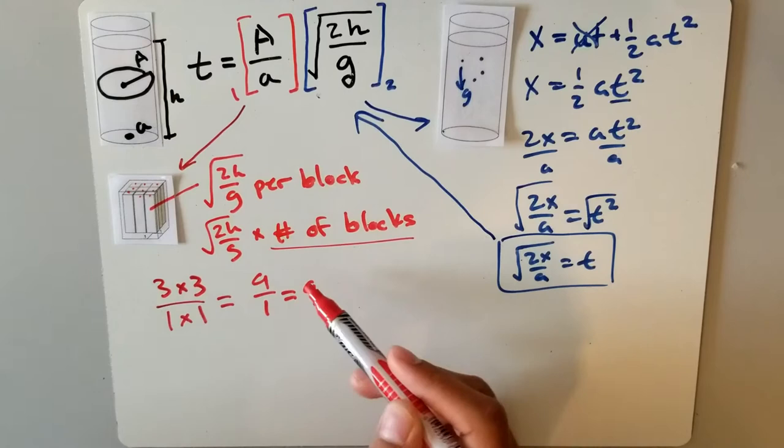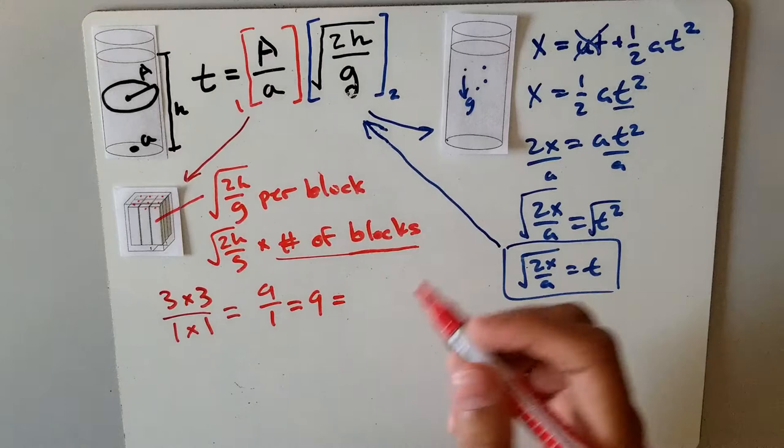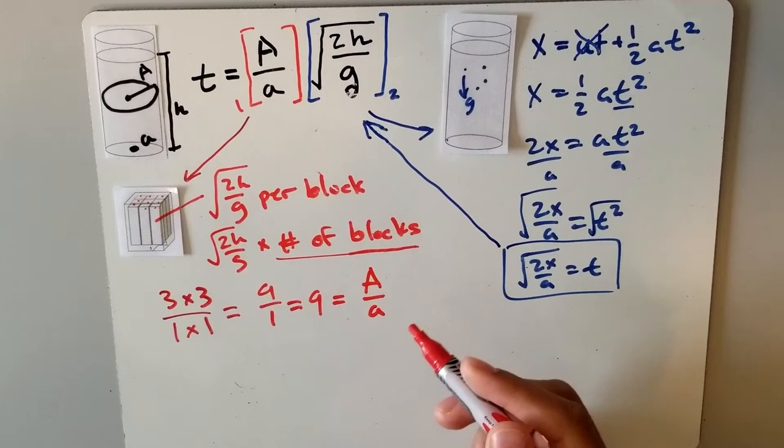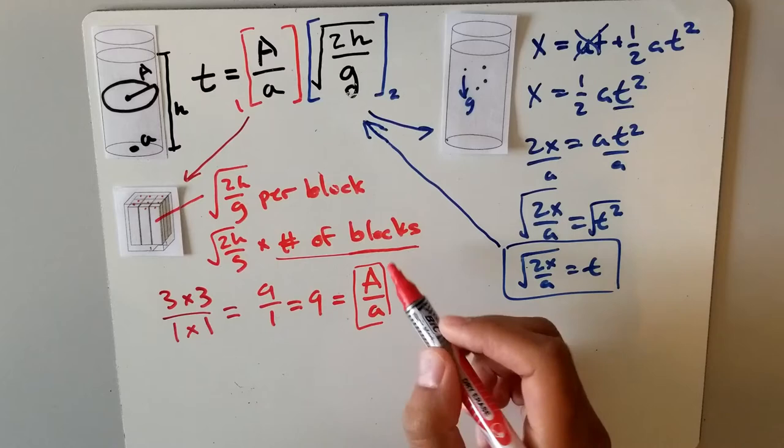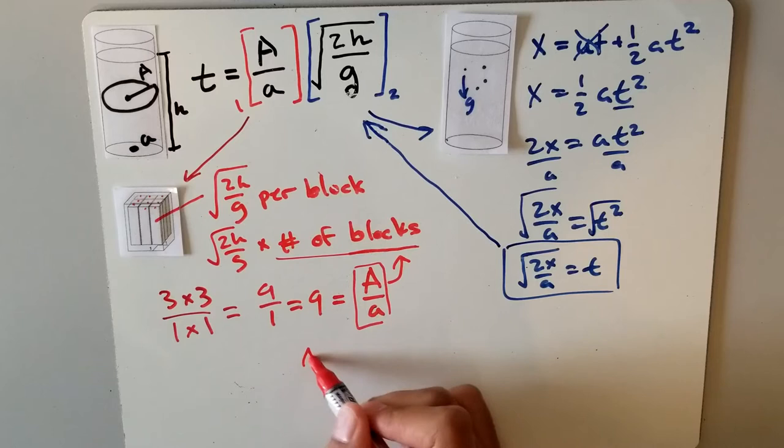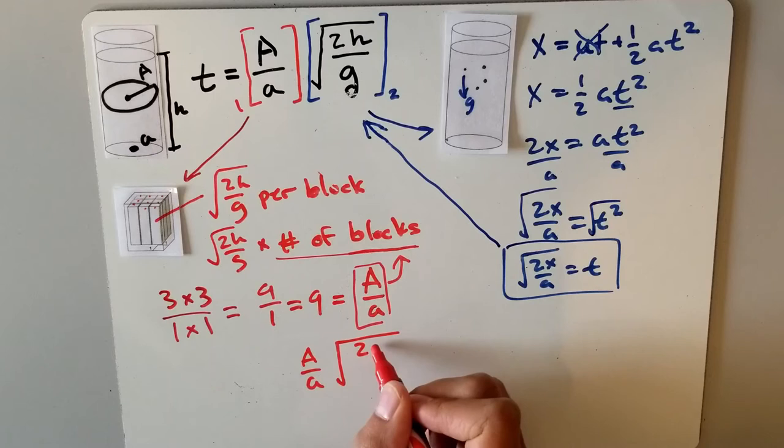Therefore, the number of boxes is equal to the area of the container over the area of the hole. It's pretty clear at this point where we're going, since if we substitute this equation into number of blocks, we get A over a multiplied by root 2h over g, which equals time.